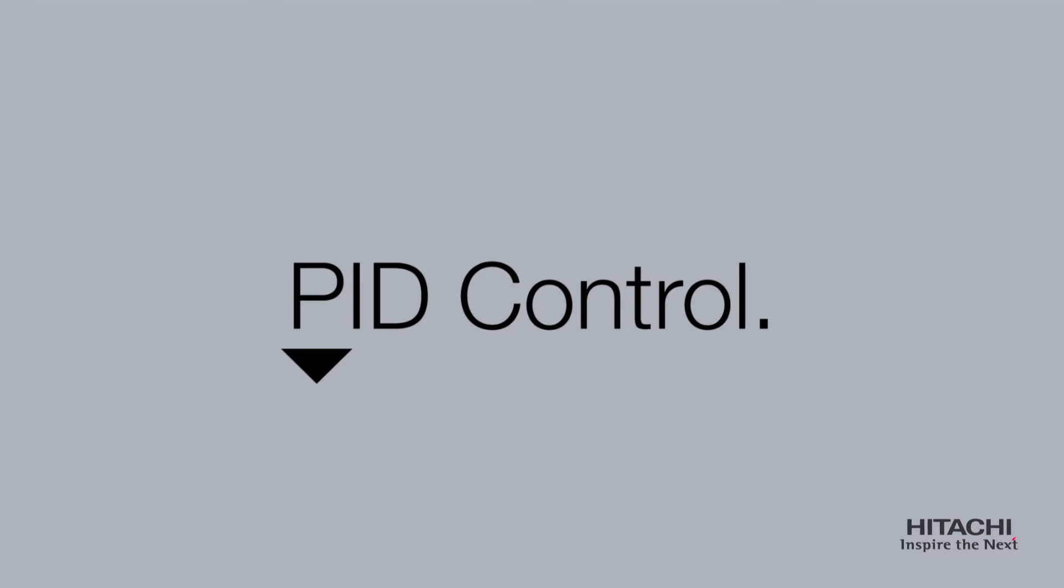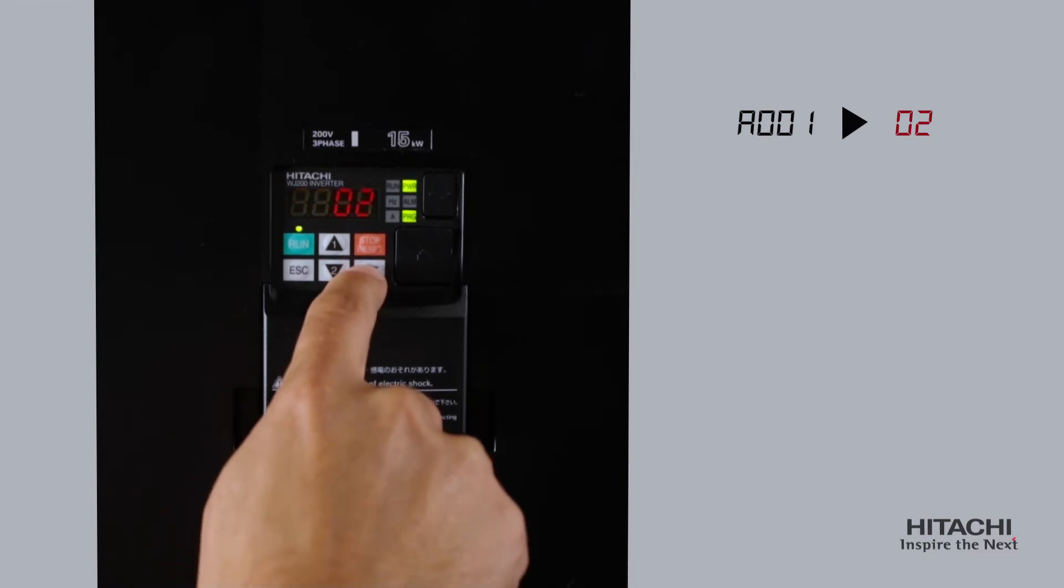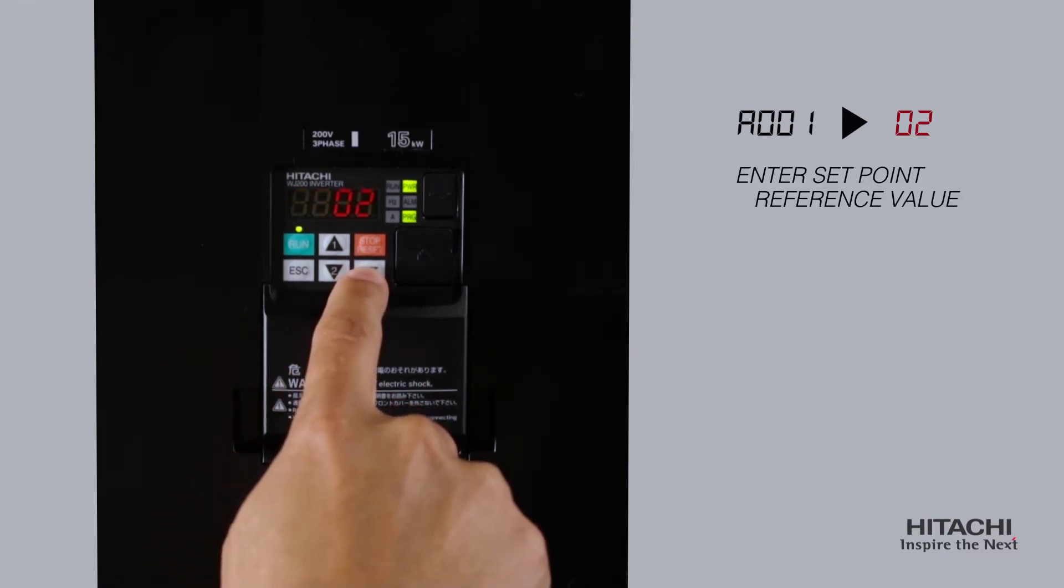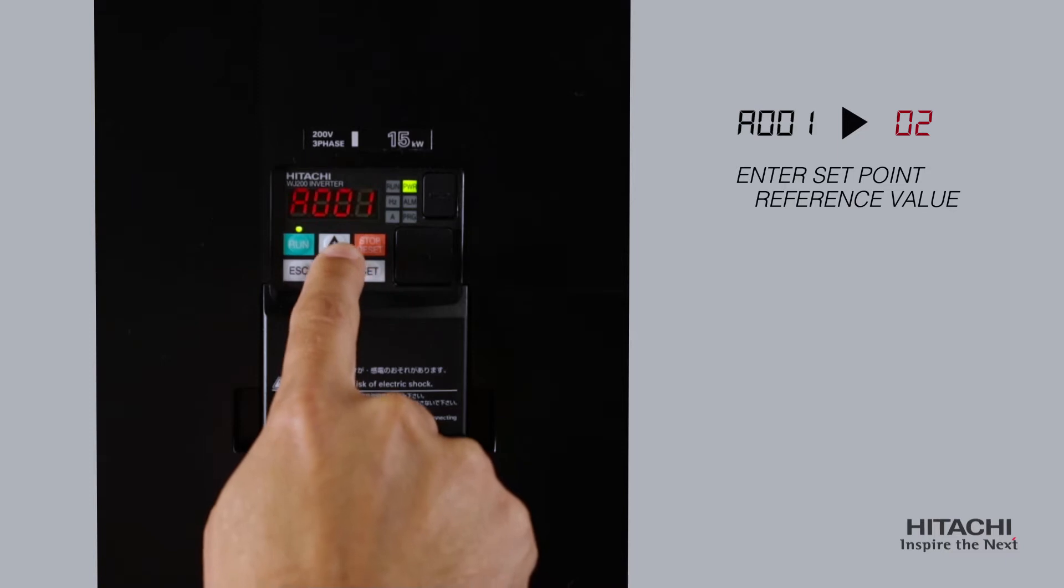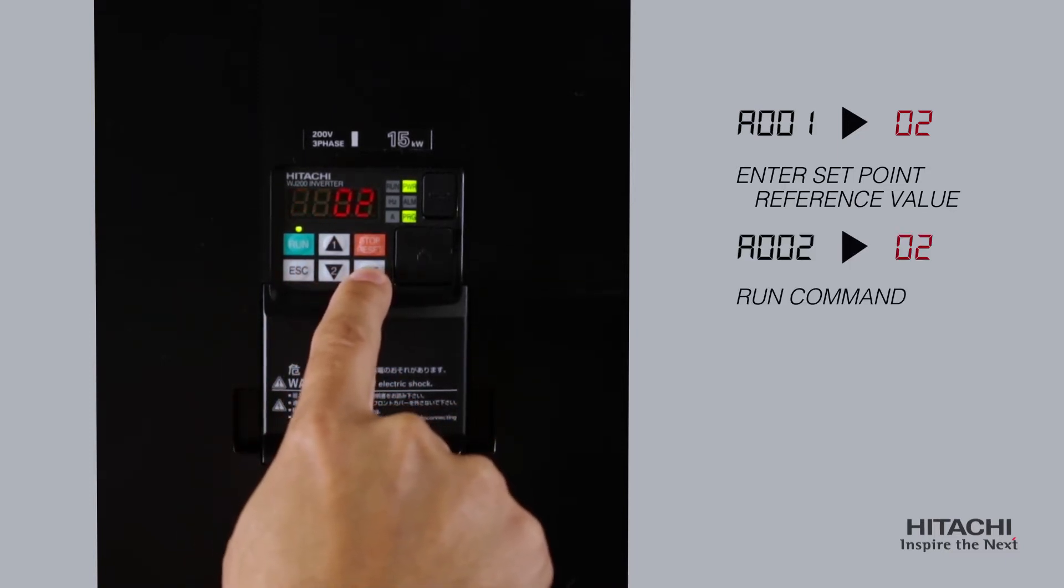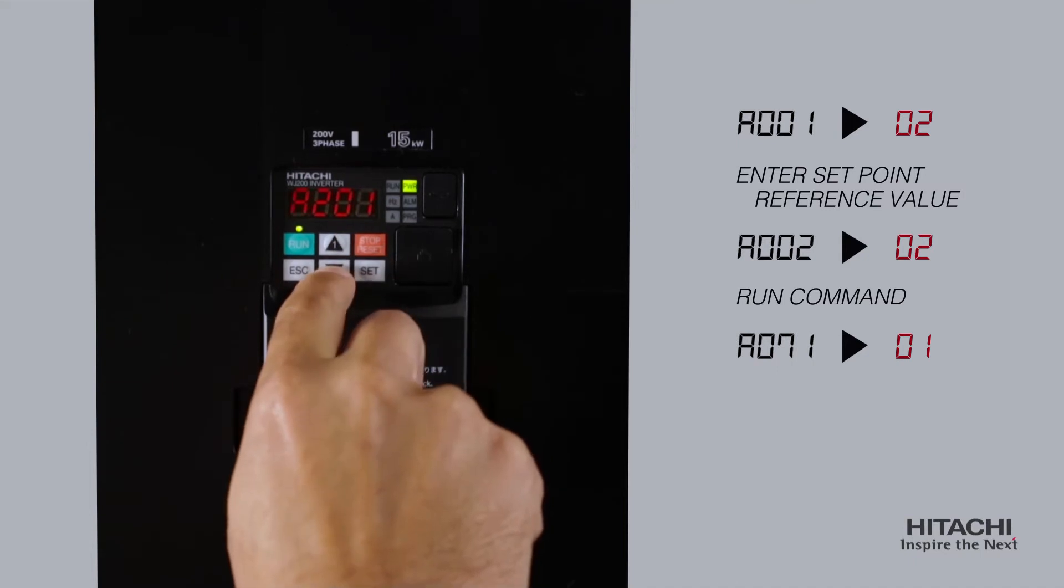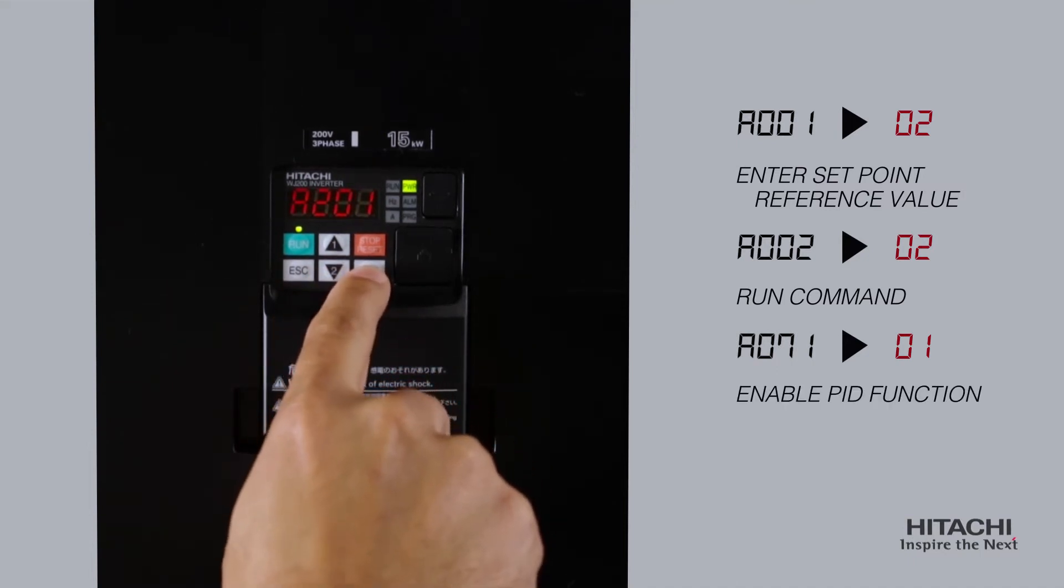PID control is a popular method to maintain a set pressure point. Set A001 to 02 and enter the set point reference value. Set A002 to 02. This is the run command. Then set A71 to 01 to enable the PID function.